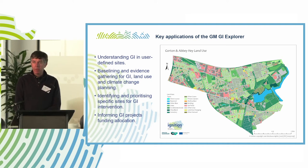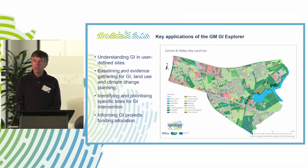It can also inform GI funding applications — we're looking at the example of the emerging GM Environment Fund in relation to that. In summary, the GI Explorer is a portal to the best available GI data for Greater Manchester, enabling easy access to and analysis of that GI data without the need for GIS skills and capacity. We hope this becomes part of the legacy of the Ignition project, helping move towards a greener Greater Manchester through strategic and evidence-based approaches to GI investment and intervention. Details on how to access the GI Explorer will be available on the Ignition web page over the coming weeks.